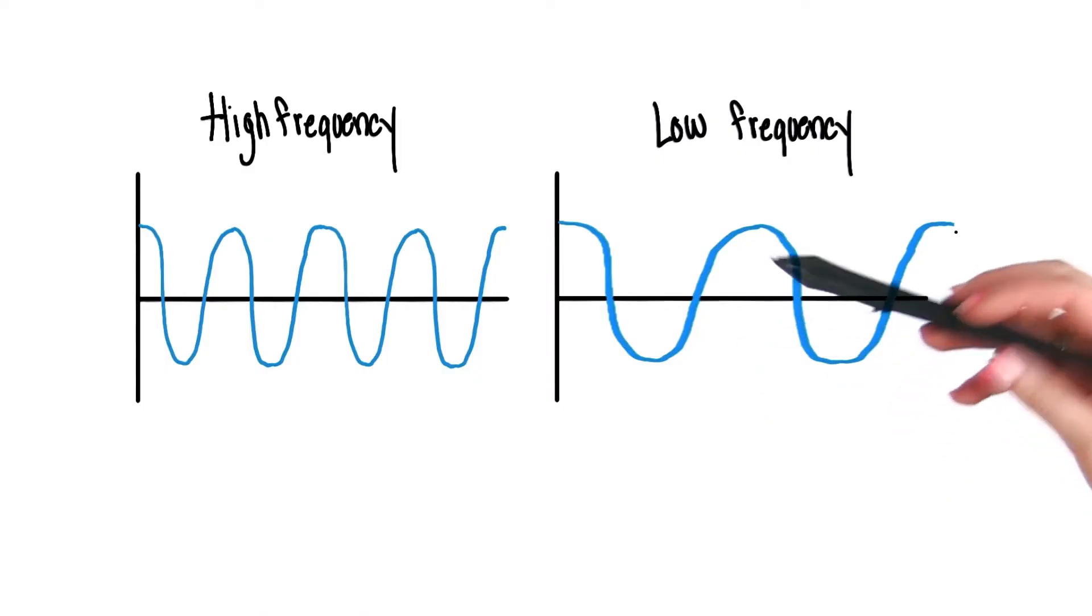Do you remember which property corresponded to pitch? Yeah, that was frequency. Exactly, and so what would a, for example, high frequency wave look like? It would look like this. And what about a low frequency wave? It would look like this. Excellent, that's perfect.